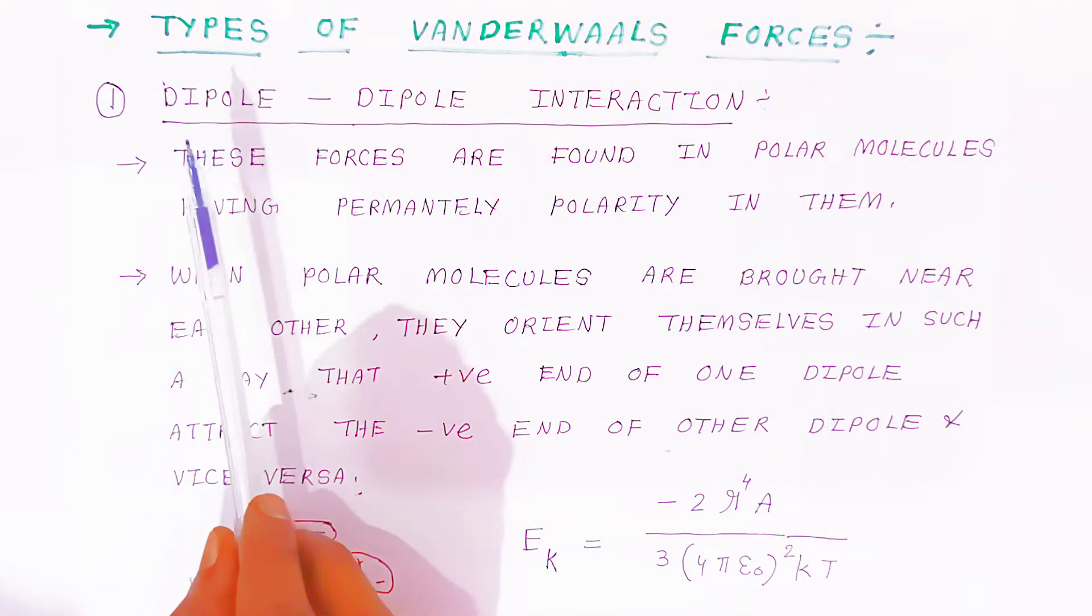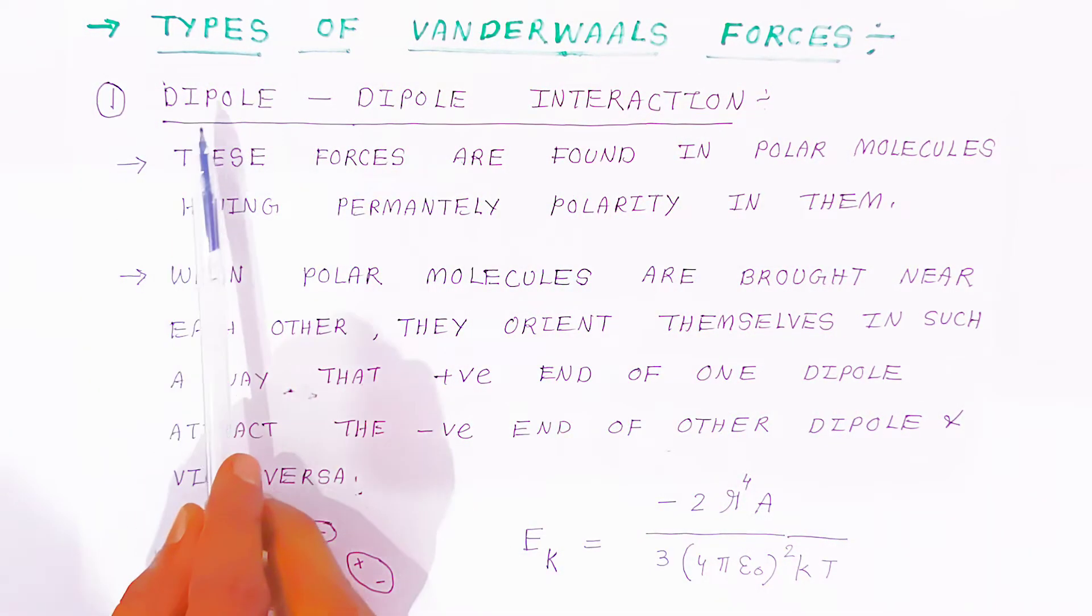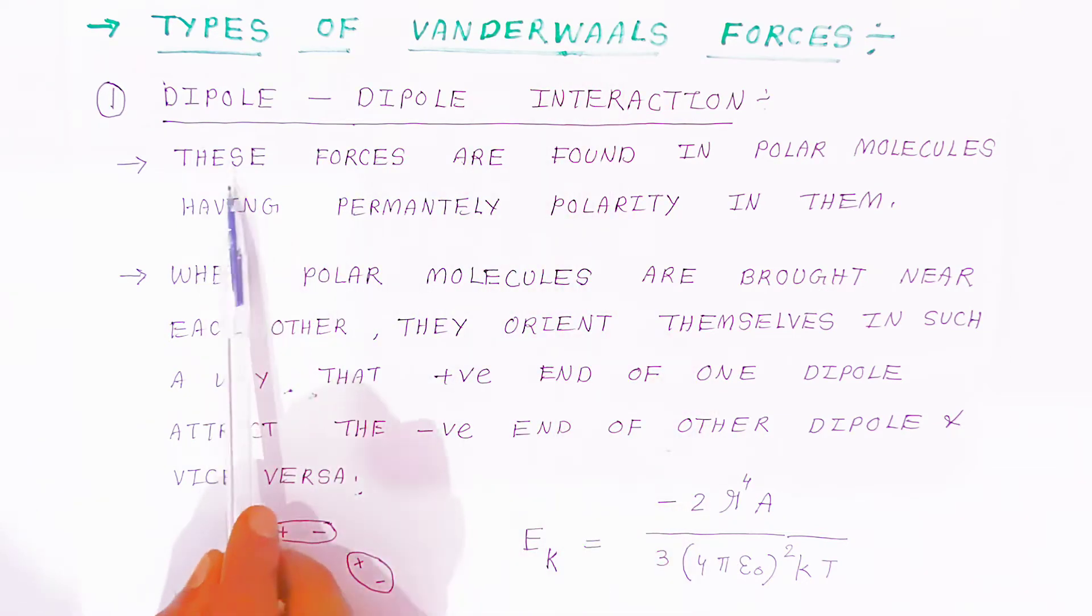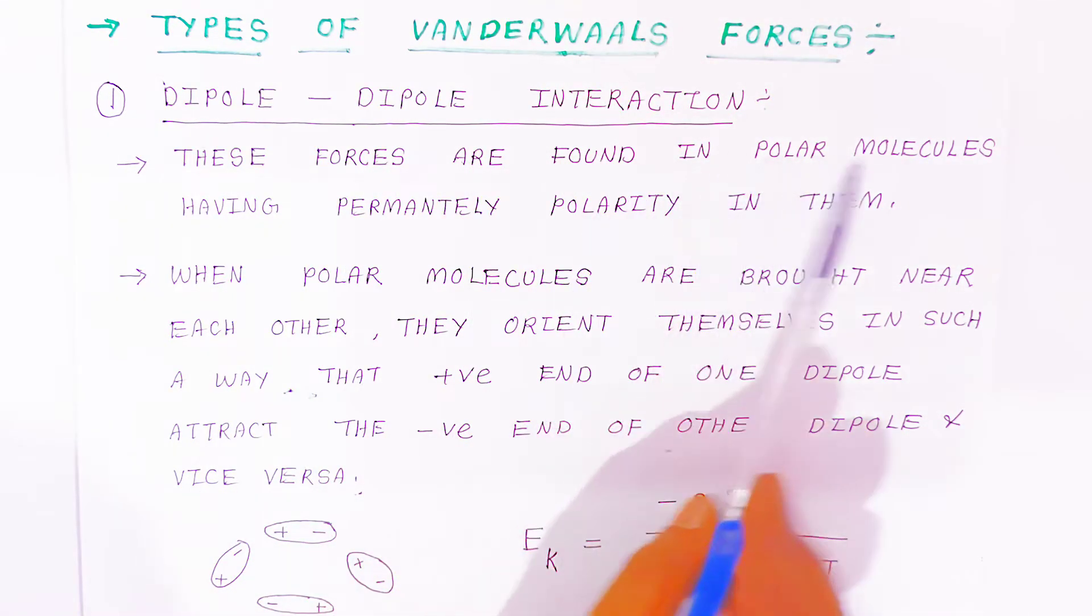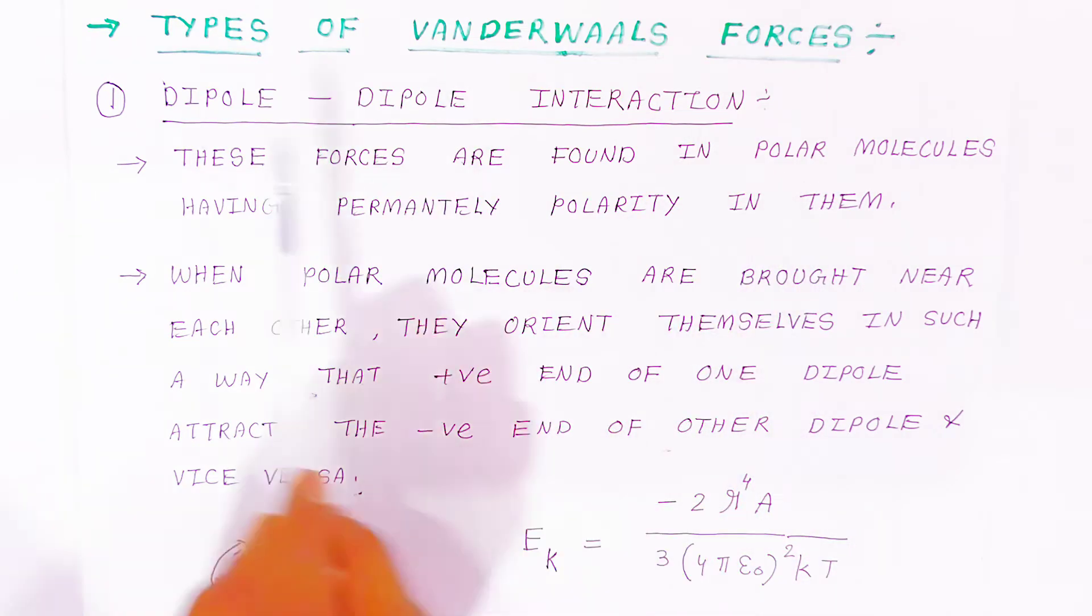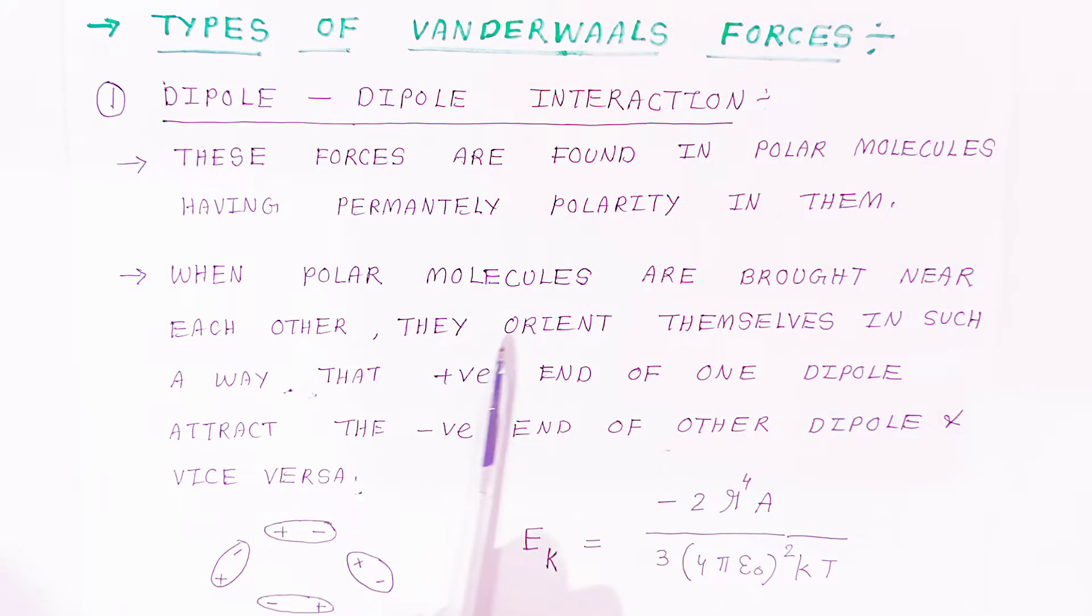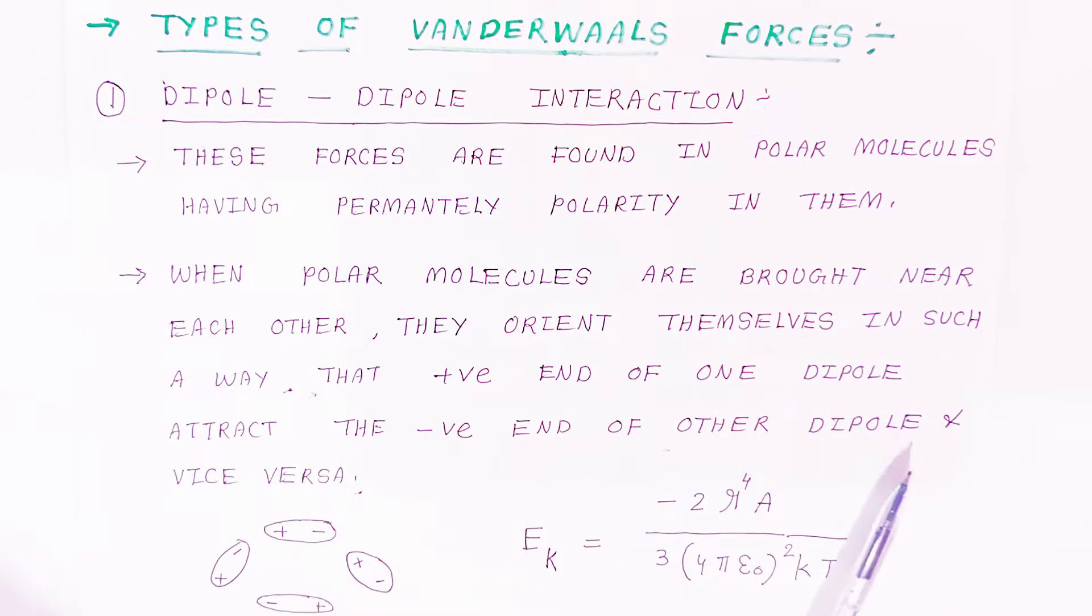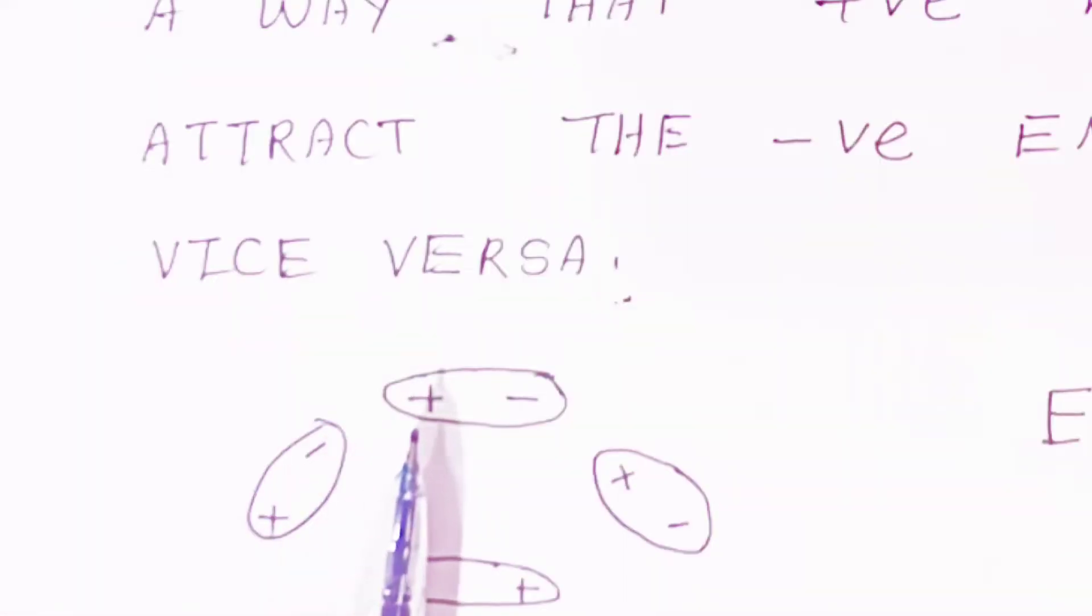Now we are going to see types of Van der Waals forces. First type is dipole-dipole interaction. These forces are found in polar molecules having permanent polarity in them. When polar molecules are brought near each other, they orient themselves in such a way that the positive end of one dipole attracts the negative end of other dipole and vice versa.